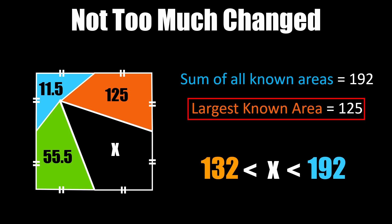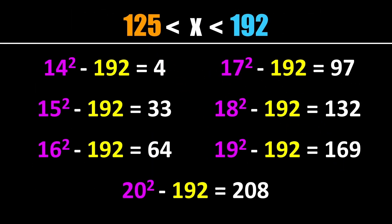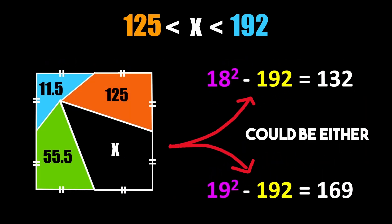Since the largest known area is now 125 our lower bound for x becomes 125 instead of 132. And now if we do what we did before and try to eliminate the potential areas based off the lower and upper bounds we see that there's now two areas that could be valid. And because the algebraic method doesn't give us a way to tell which one of these two areas it could be we can't give an accurate answer in these set of circumstances.